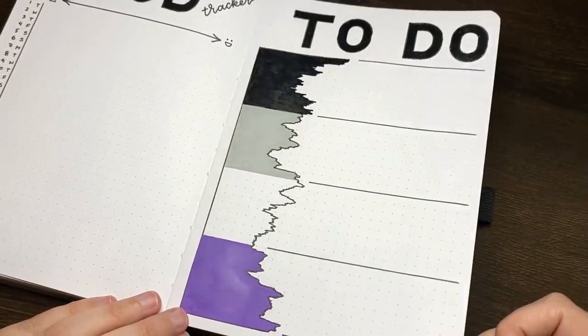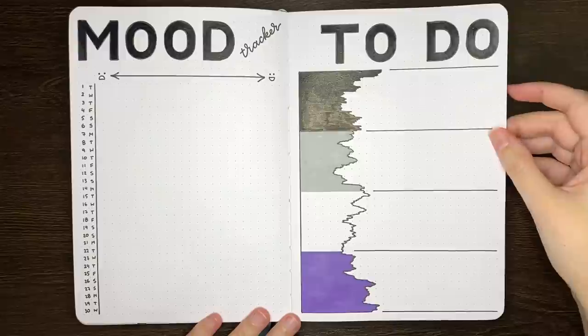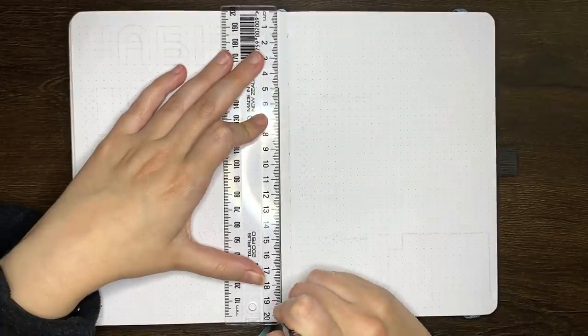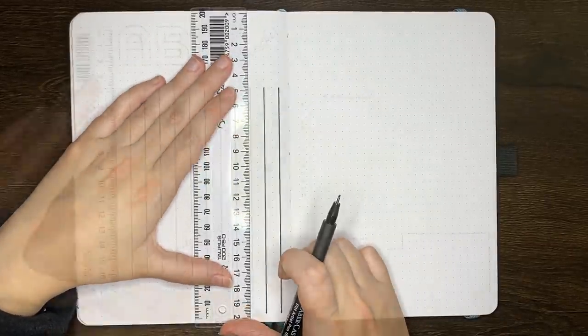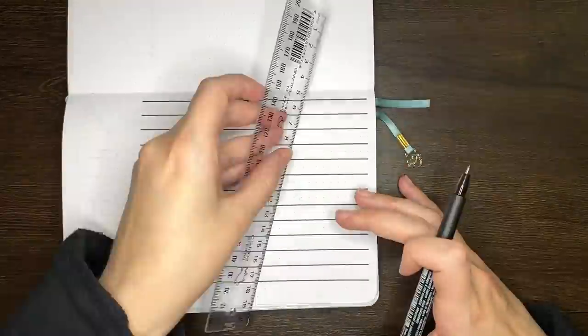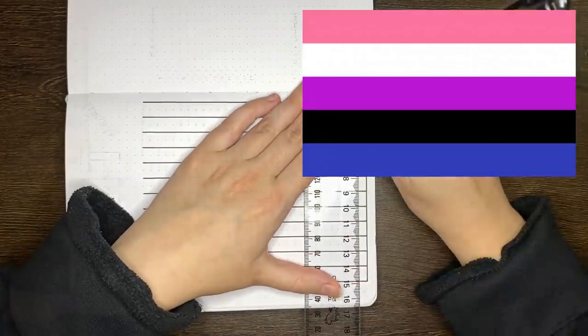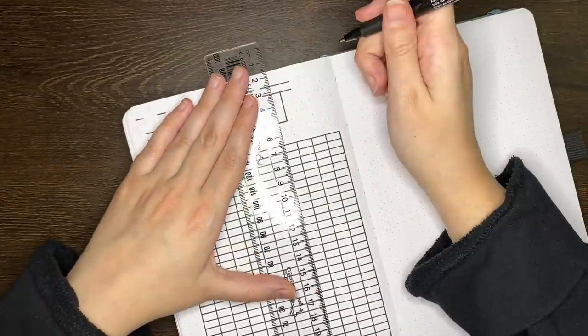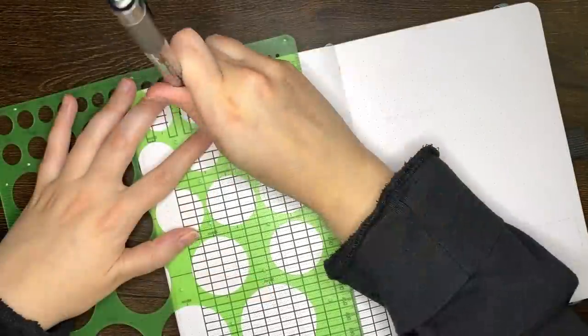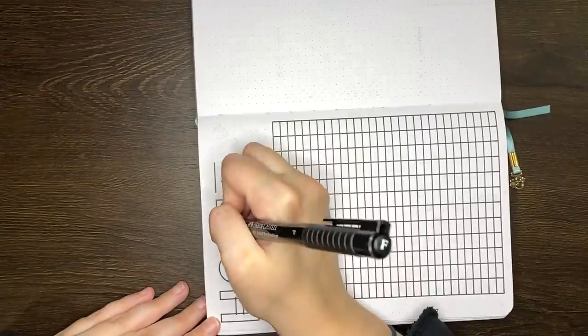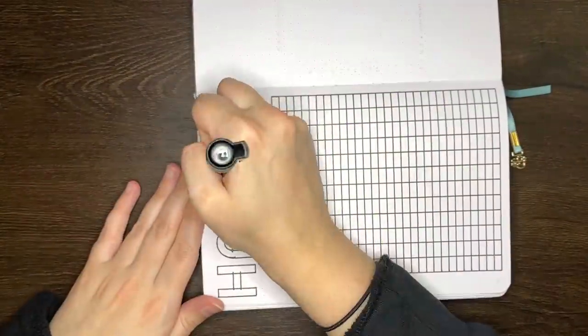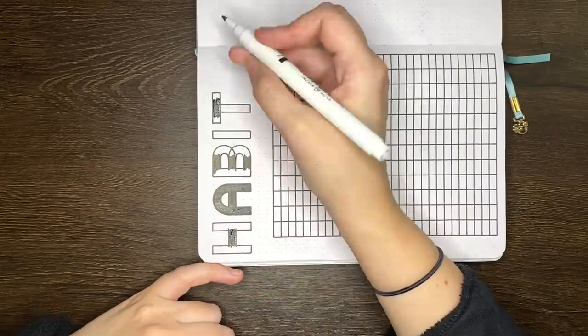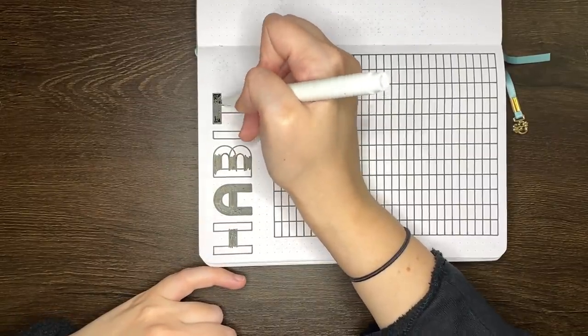Up next was my monthly habit tracker. I decided to go back to the vertical style for June, as that way I can easily fill in my habit completion to make it represent another pride flag. The flag I chose for this one was the gender fluid, or gender flexible flag, mainly because it has five stripes, which means I could again have six days for each of the colours. I haven't decided what my habits for the month are going to be just yet, but once I do, I'll assign each habit an icon, and write those along the top of the tracker.